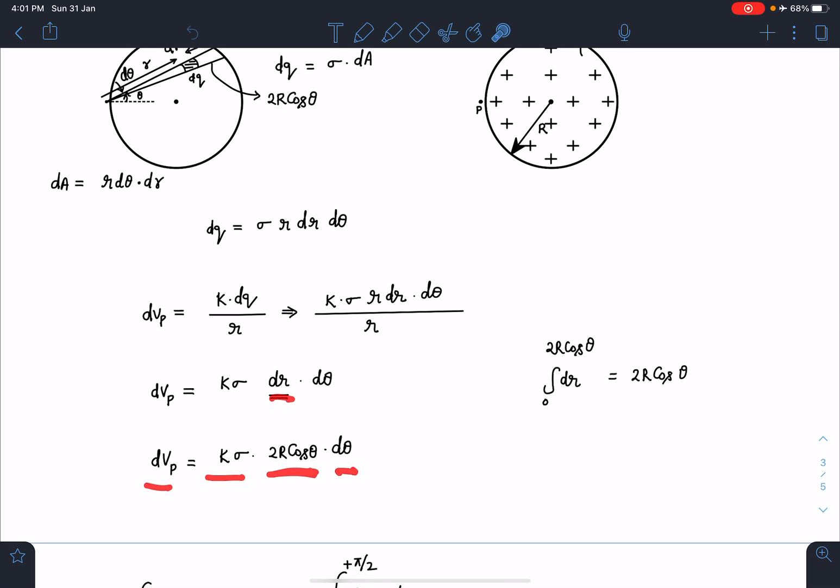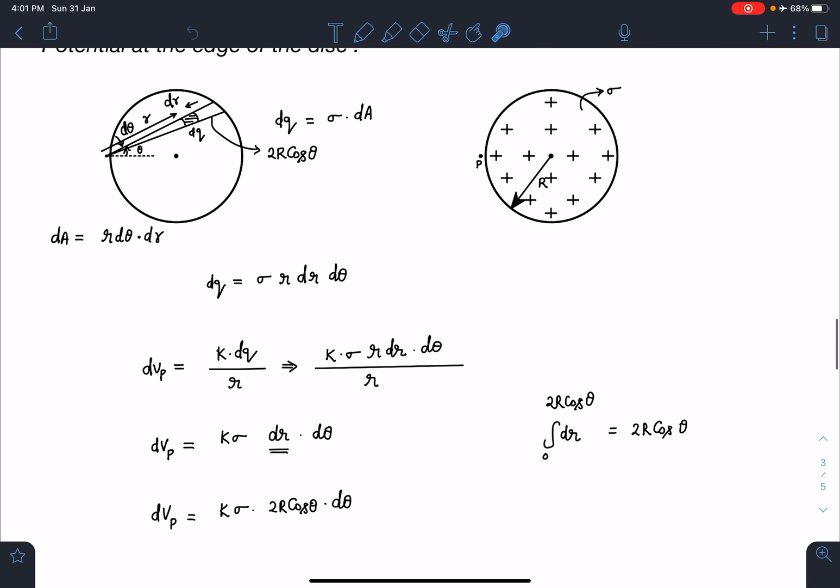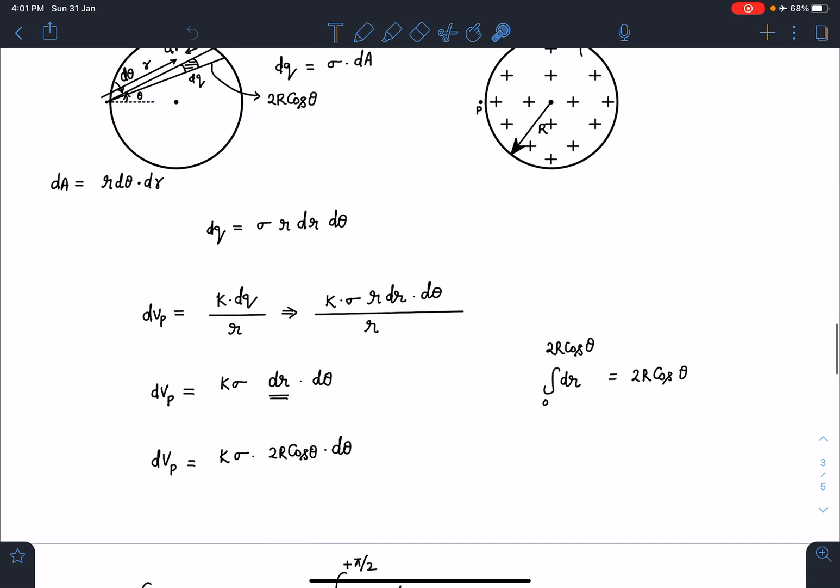This entire triangle's potential is this much. Now if I add all such triangles ranging from minus pi/2 to plus pi/2, I'll get the potential of the entire disk. So angle theta limit will go from minus pi/2 to plus pi/2.